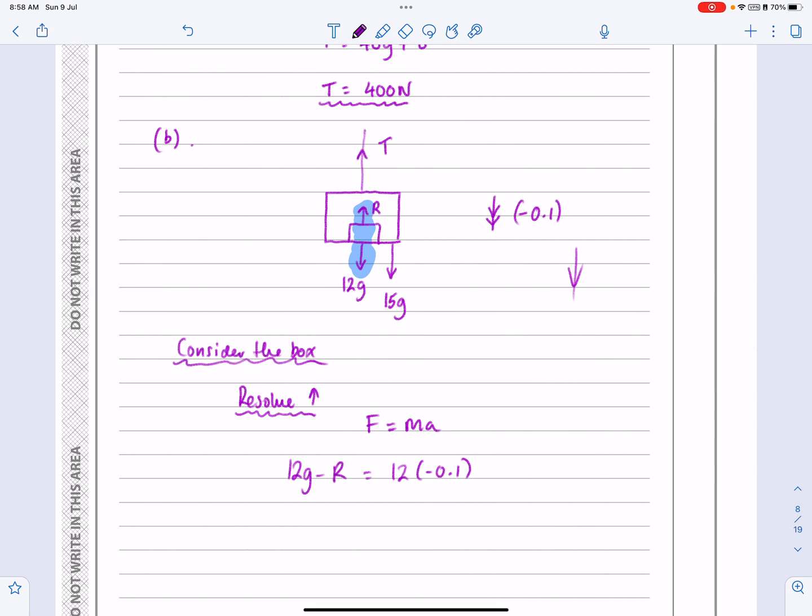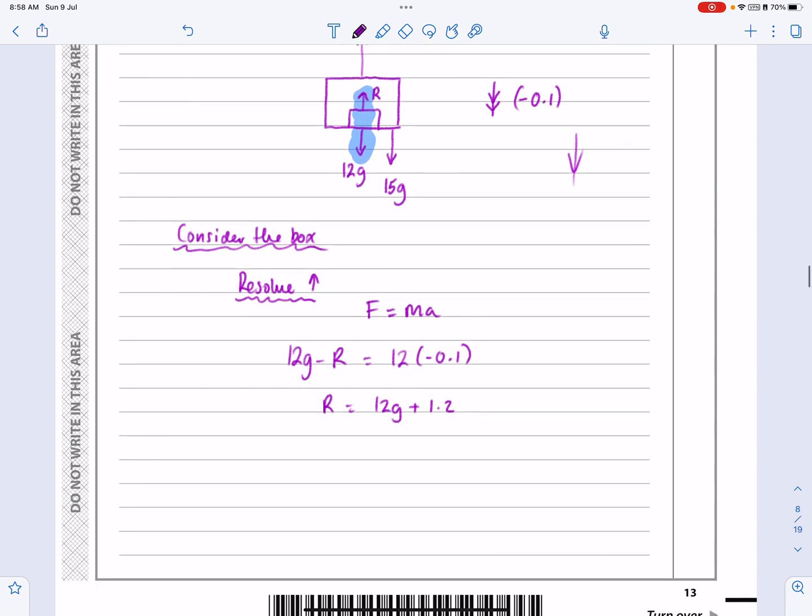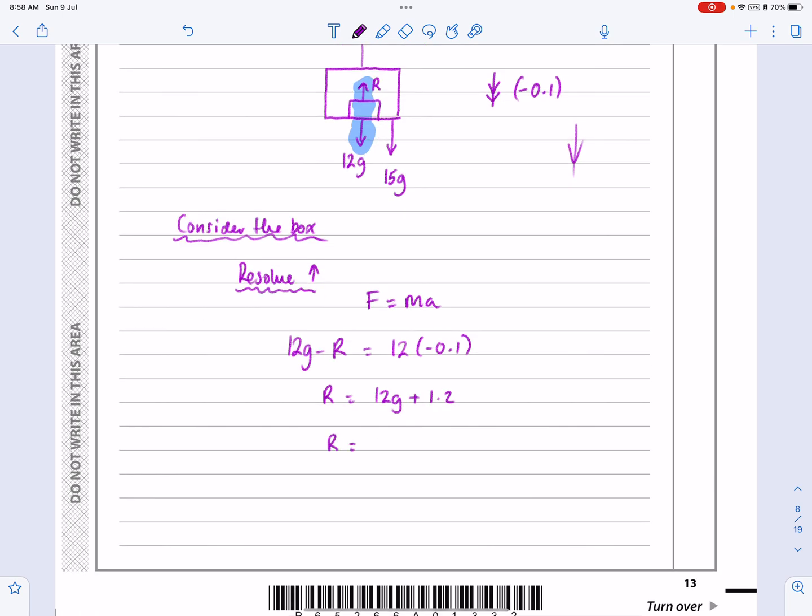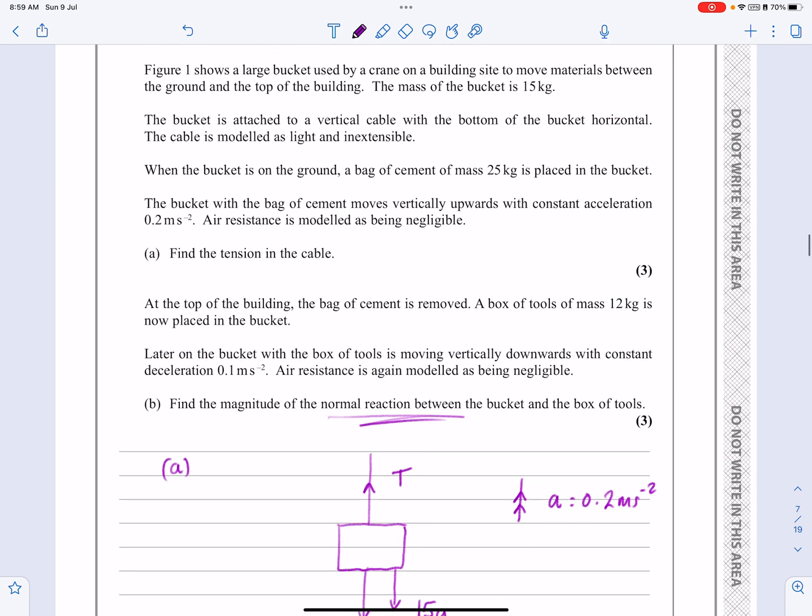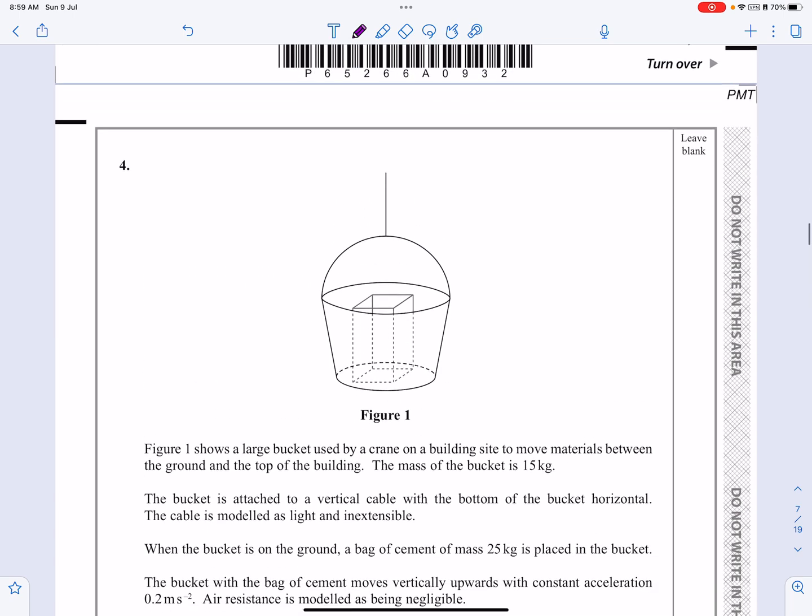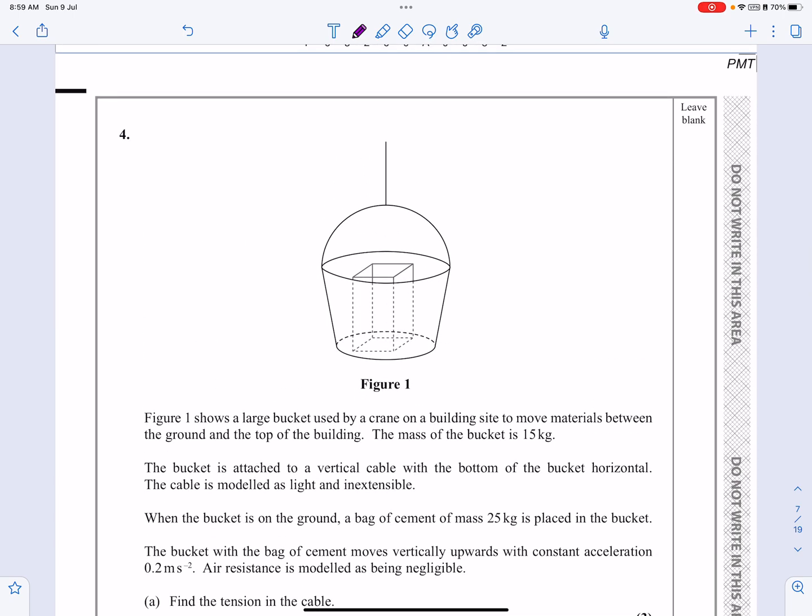And then you can just rearrange that. R is going to be equal to 12G plus 1.2. If you rearrange all that, so R works out to be 119 or rather 120 Newtons, because we have to do it to two significant figures. So although we don't like those questions, that one hopefully wasn't too bad and should make sense.